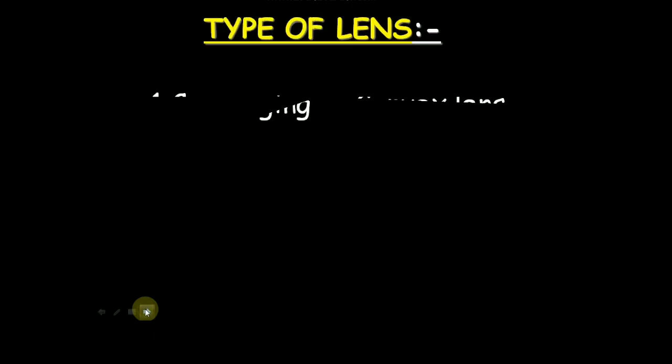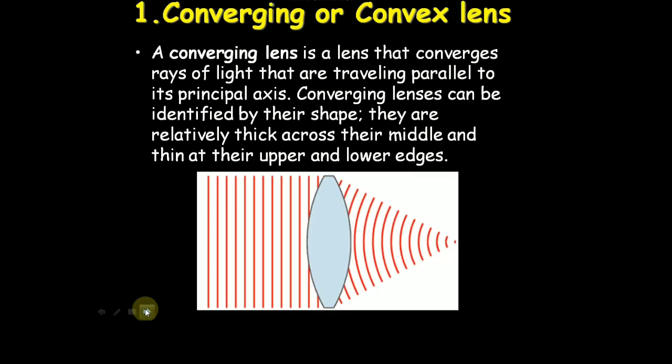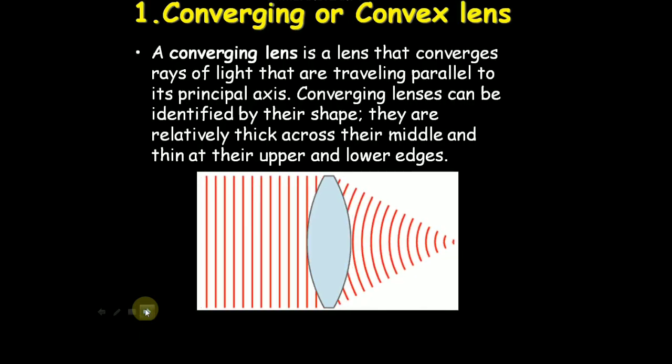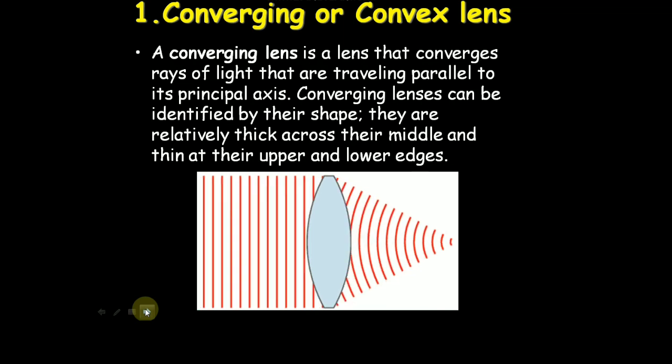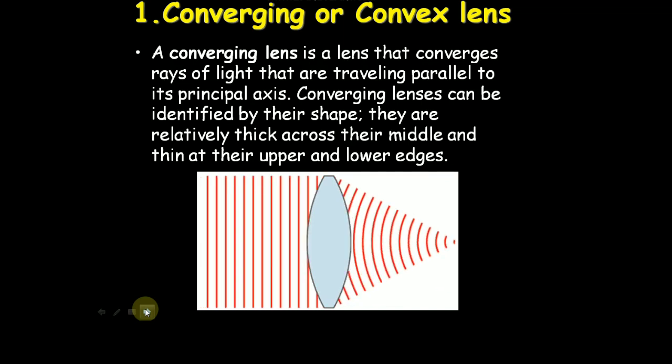Type of lens: converging or convex lens, and diverging or concave lens. A converging lens is a lens that converges rays of light that are traveling parallel to its principal axis.